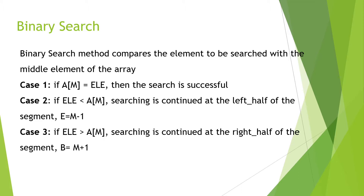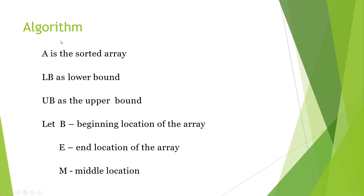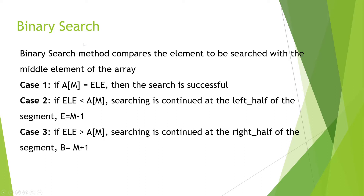We have learned about binary search in the chapter on data structures. Binary search is a method which compares the element to be searched with the middle element of the array. Searching means finding whether an element is present in the array or not. There are two types: linear search, where we compare each element, and binary search, where we divide the array into two equal parts and search only the relevant half.